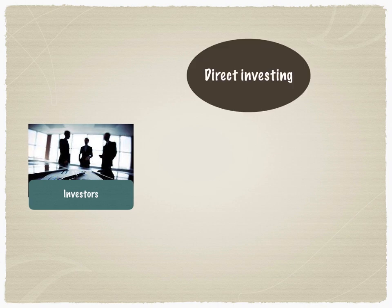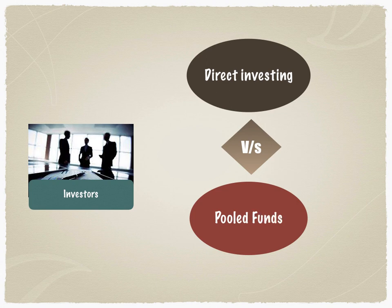The investors have a choice. They could choose to directly invest in assets, or they could invest into pooled funds. The pooled funds could be a hedge fund, a mutual fund, or a pension plan, etc. So the investor is thinking: what should they do? They have two choices — direct investing versus pooled funds. What should they choose? Who is better?